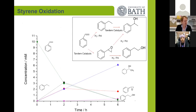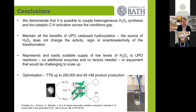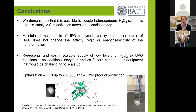We've demonstrated that it's possible to take these hydrogen peroxide catalysts, put them under very harsh reaction conditions, and still produce enough hydrogen peroxide to allow a range of chemical and enzymatic transformations. We can maintain all the benefits of UPO hydroxylations, and really the source of the hydrogen peroxide does not affect the activity, regio- and enantioselectivity of the enzyme.